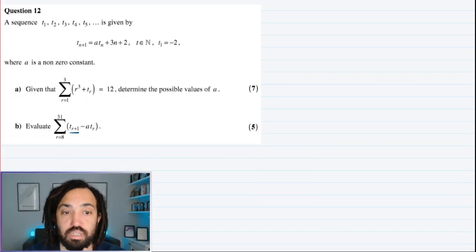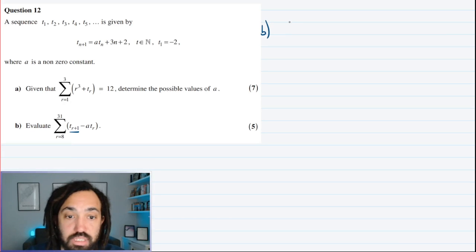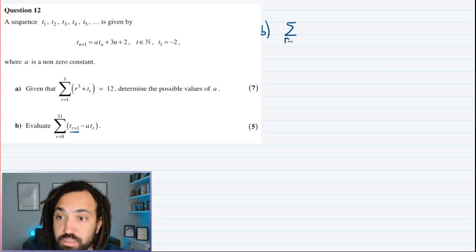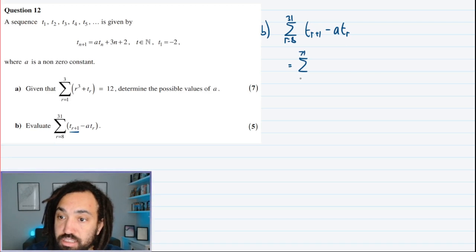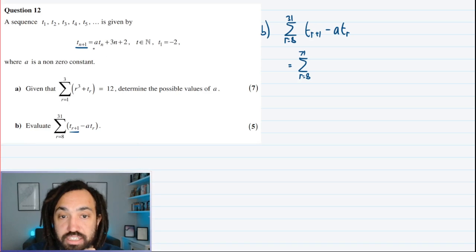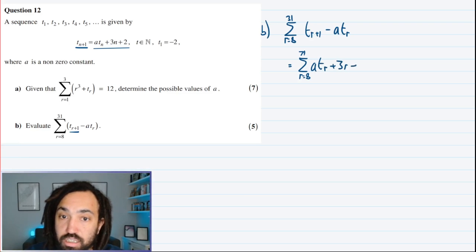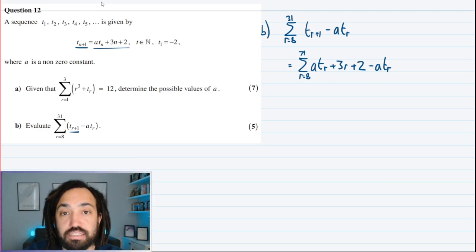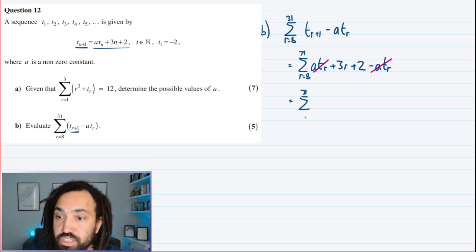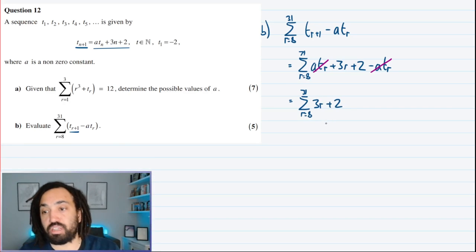Okay, on to part b. We're asked to sum from r is equal to 8 up to 31, t_{r+1} minus a*t_r. So let's see if we can try and simplify this. We're going to substitute in the expression we have for t of r plus 1. So just replace all the n's in this equation for r's to get a*t_r plus 3r plus 2. And then we're subtracting a*t_r. And we're going to get a lovely bit of cancellation here. Those are going to go. And that is just going to leave me with this summation of 3r plus 2.